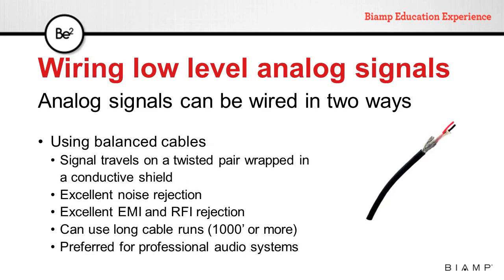Balanced cables, on the other hand, have a twisted pair wrapped in a conductive shield. Signal travels on those two conductors, so the shield is only used for ground. They have excellent noise rejection and excellent electromagnetic interference and radio frequency interference rejection. They can be used for long cable runs, 10,000 feet or more, and is the preferred method for professional audio systems.